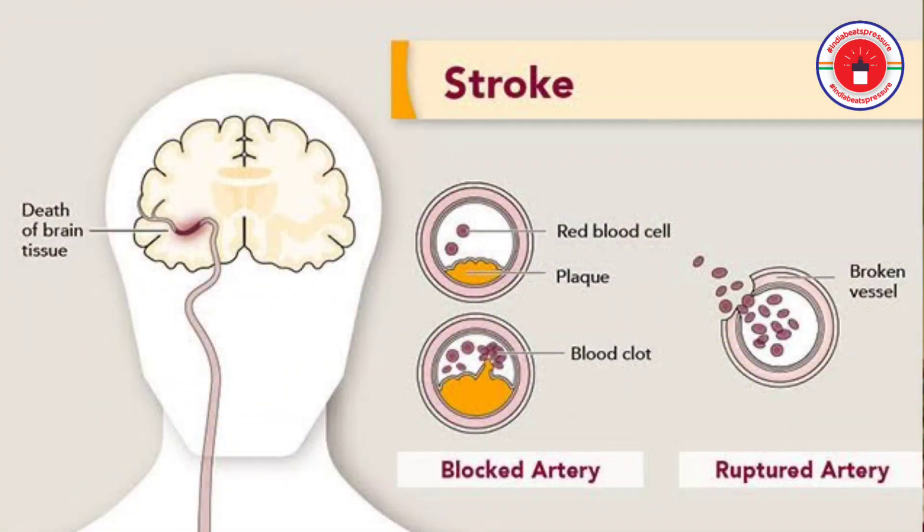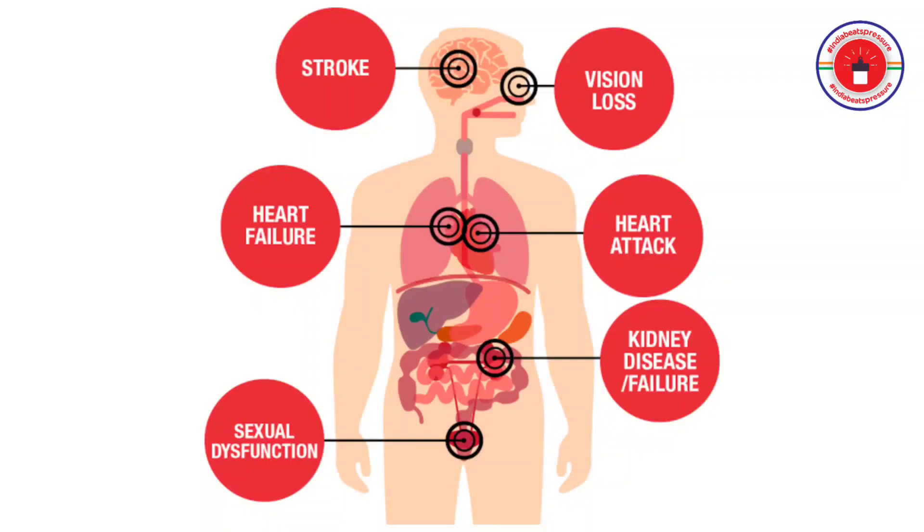Usually hypertension has very minimal symptoms. It may be silent for a long time, and suddenly a patient can develop a complication like stroke or heart attack. It is known as a silent killer because it has no or very minimal symptoms. Though it is silent, blood pressure should be measured often so it can be diagnosed earlier. It puts people at risk of several diseases — from cardiovascular problems to kidney failure, stroke, and even blindness.